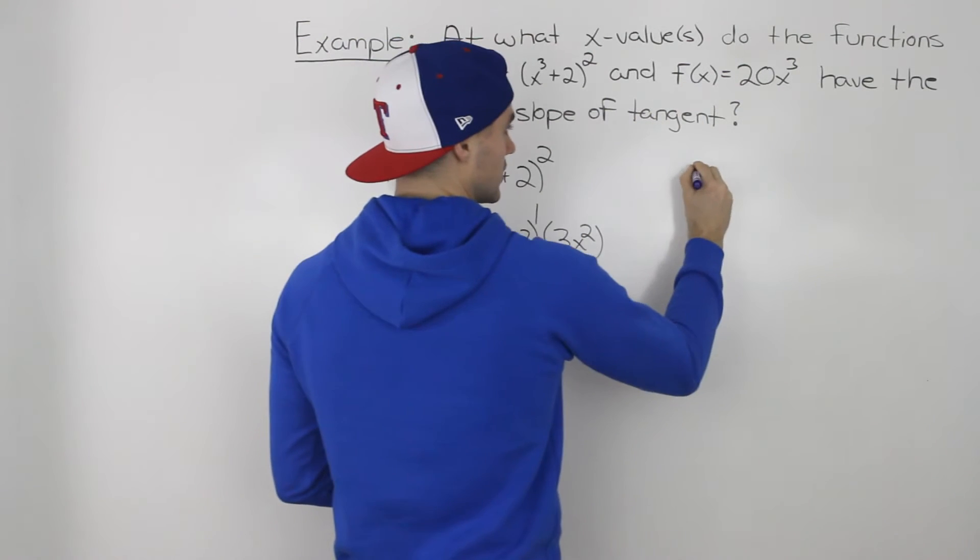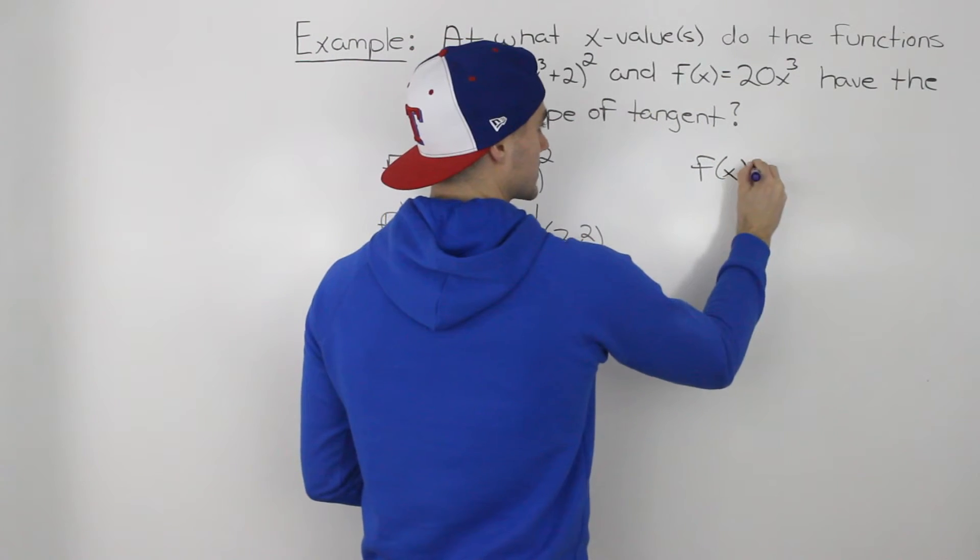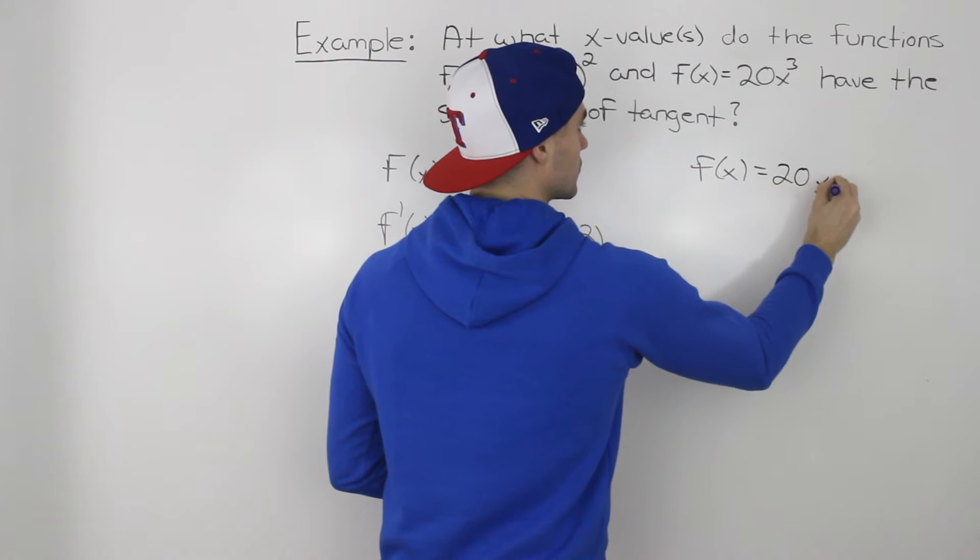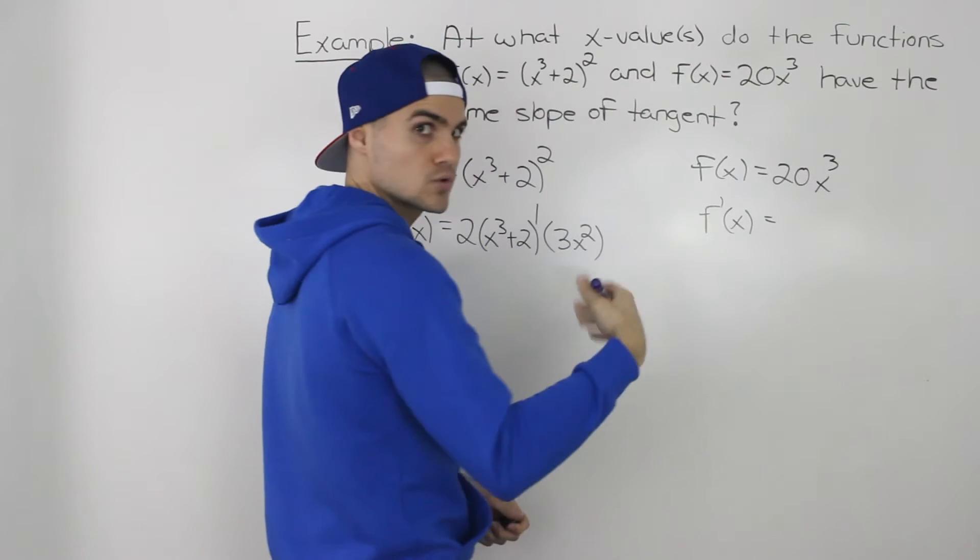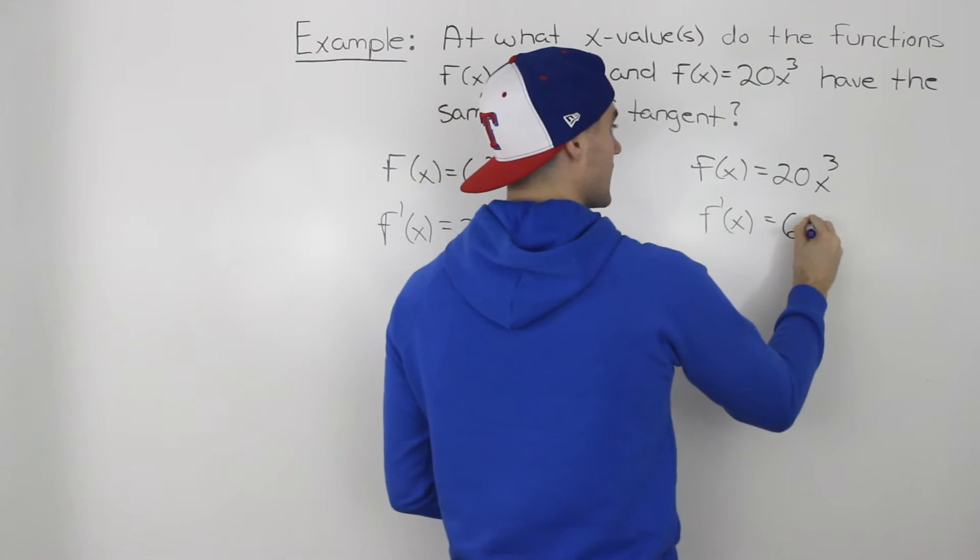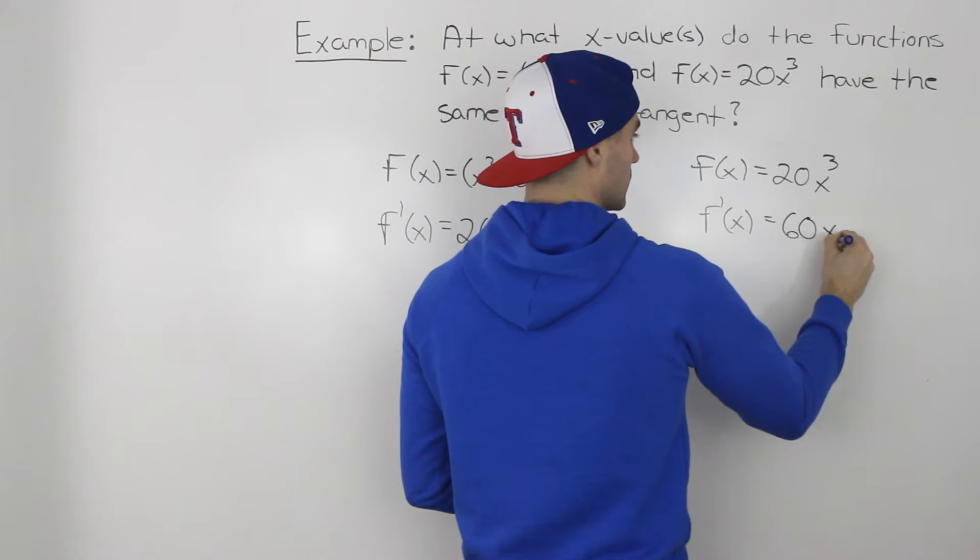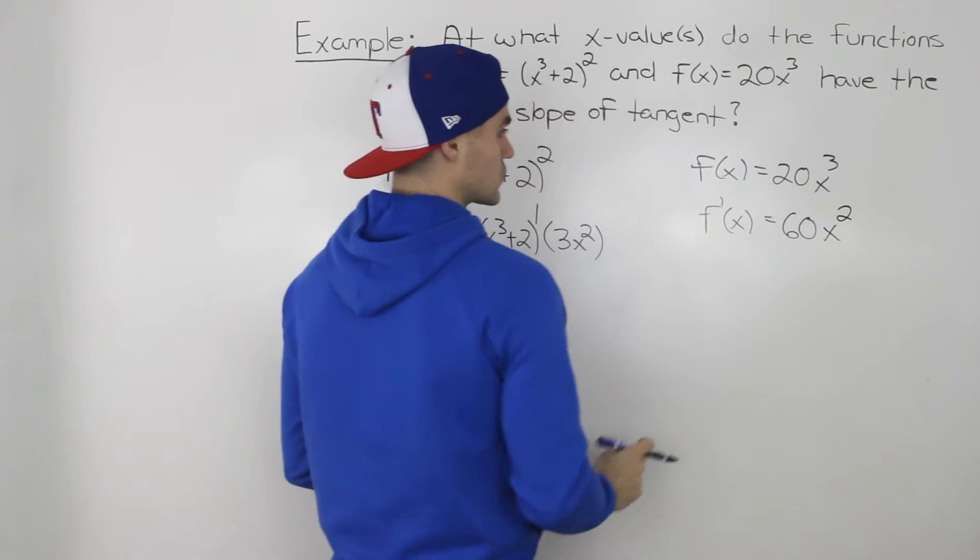Now this function here, 20x³, to find the derivative of it is really simple. We just apply the power rule. Bring that 3 down. 20 times 3 is 60 and then subtract 1 from the exponent so we're left with 60x².